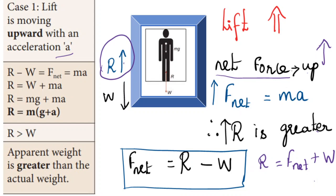By Newton's second law, F net = ma, where a is the acceleration of the lift, and W = mg. Substituting: R = ma + mg, so R = m(g + a). Therefore R is greater than W, meaning apparent weight is greater than the actual weight in this case.